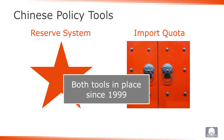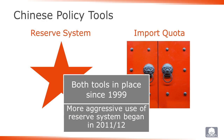Both of these tools have been in existence since China made reforms to become more market-oriented in the late 1990s. After the implementation of price guarantees that followed the 2010-2011 spike in fiber prices, the reserve system became much more aggressive in terms of the proportion of the Chinese harvest that it purchased.